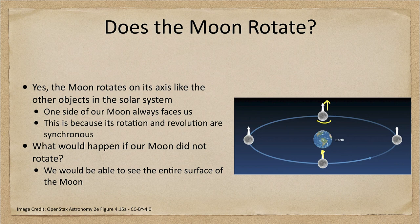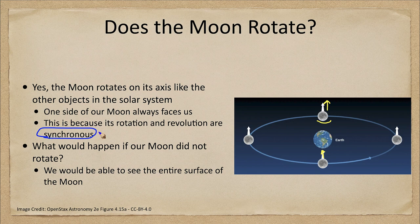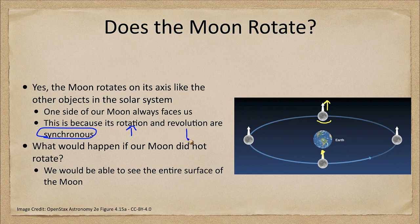So the moon has to be rotating in order to allow us to just see that one side, but the rotation is what we call synchronous. When it is synchronous, that means that rotation - how long it takes to spin on its axis - and revolution - how long it takes to move around Earth - those two are exactly the same.